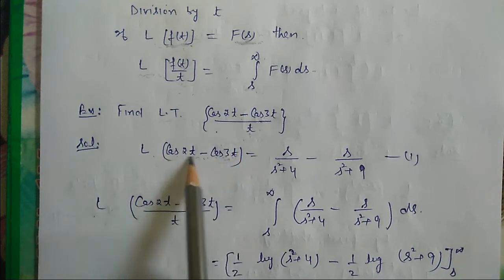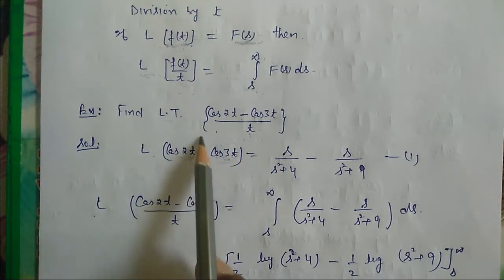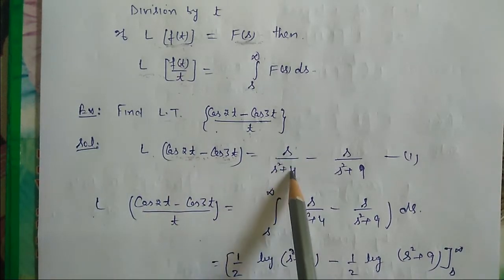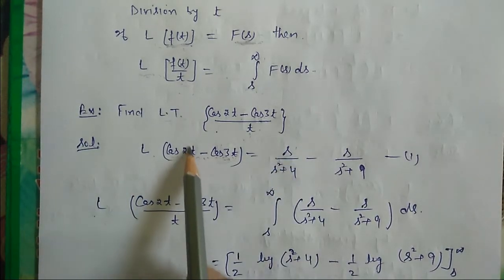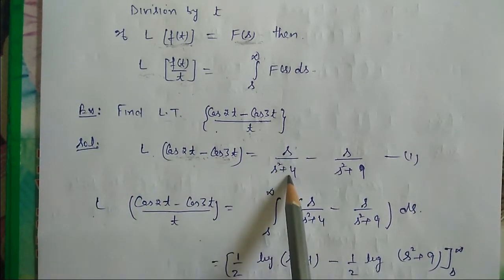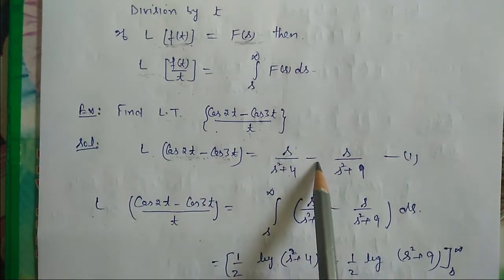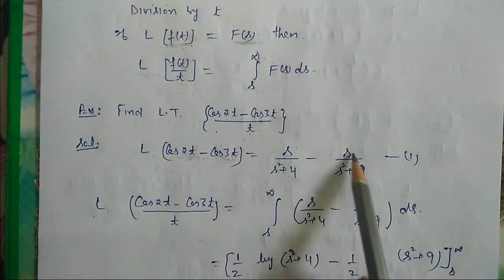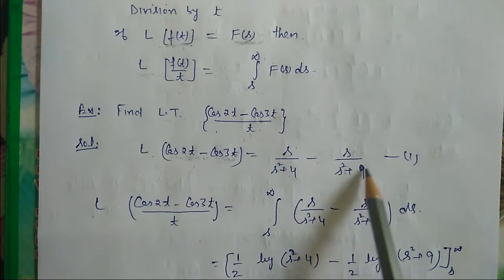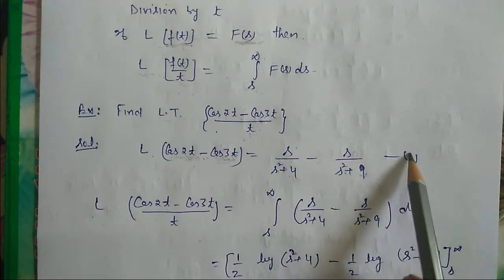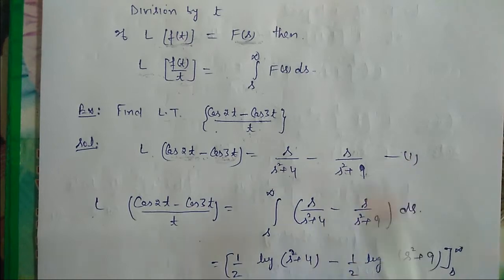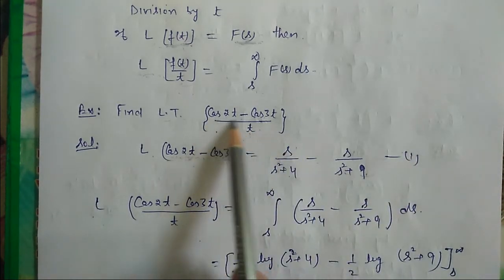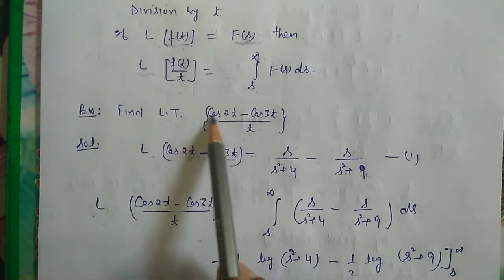The Laplace transformation of cos2t is s upon s² + 4 (since 2² = 4). Minus the Laplace transformation of cos3t, which is s upon s² + 9 (since 3² = 9). So this becomes result number 1 — this is the Laplace transformation of the function (cos2t − cos3t).